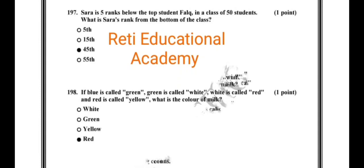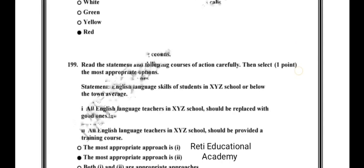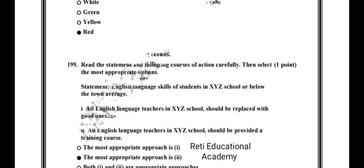Question number 198: If blue is called green, green is called white, white is called red, and red is called yellow, what is the color of milk? The answer is red, because white is called red.